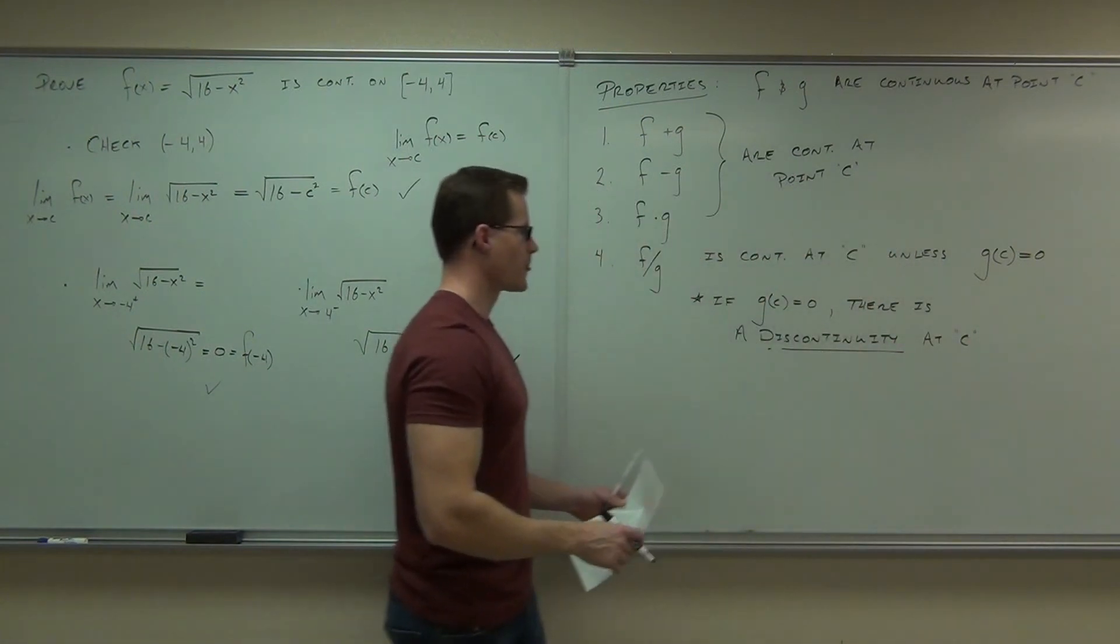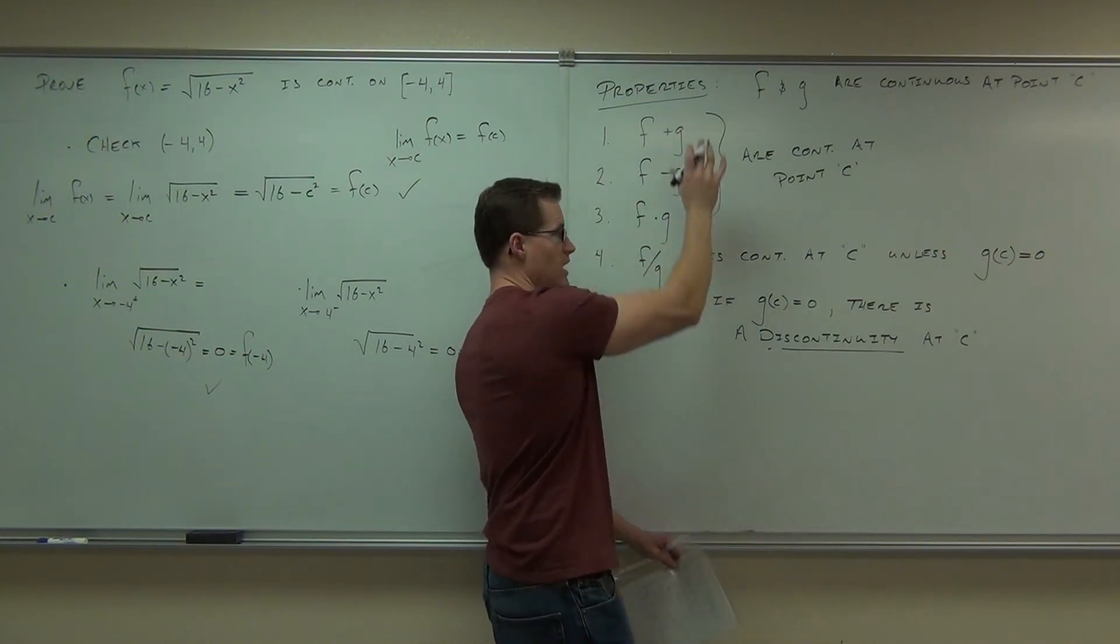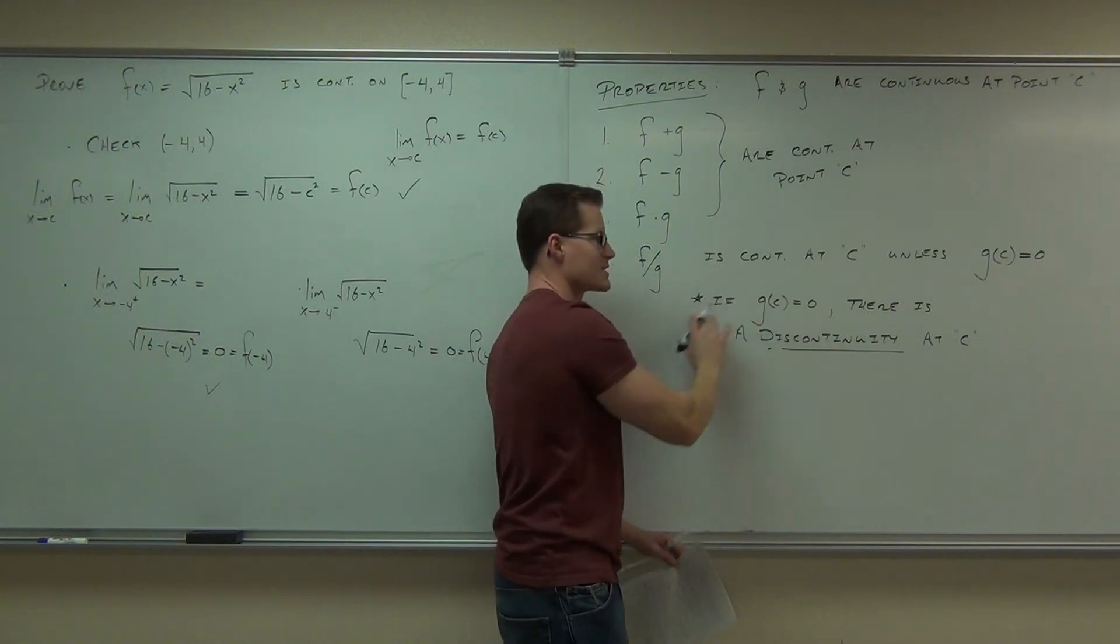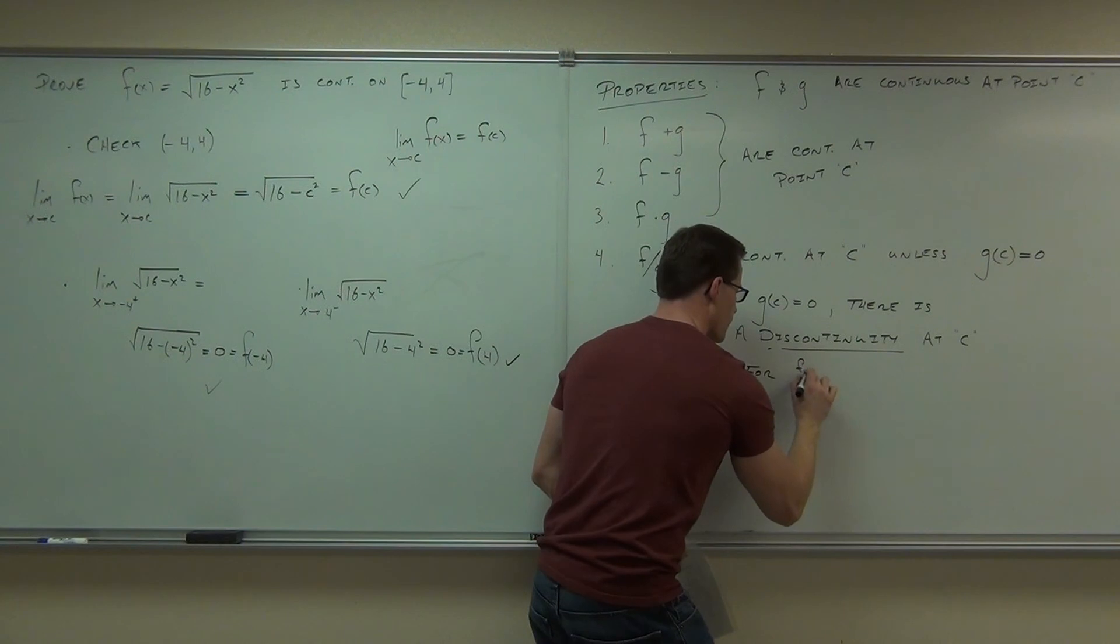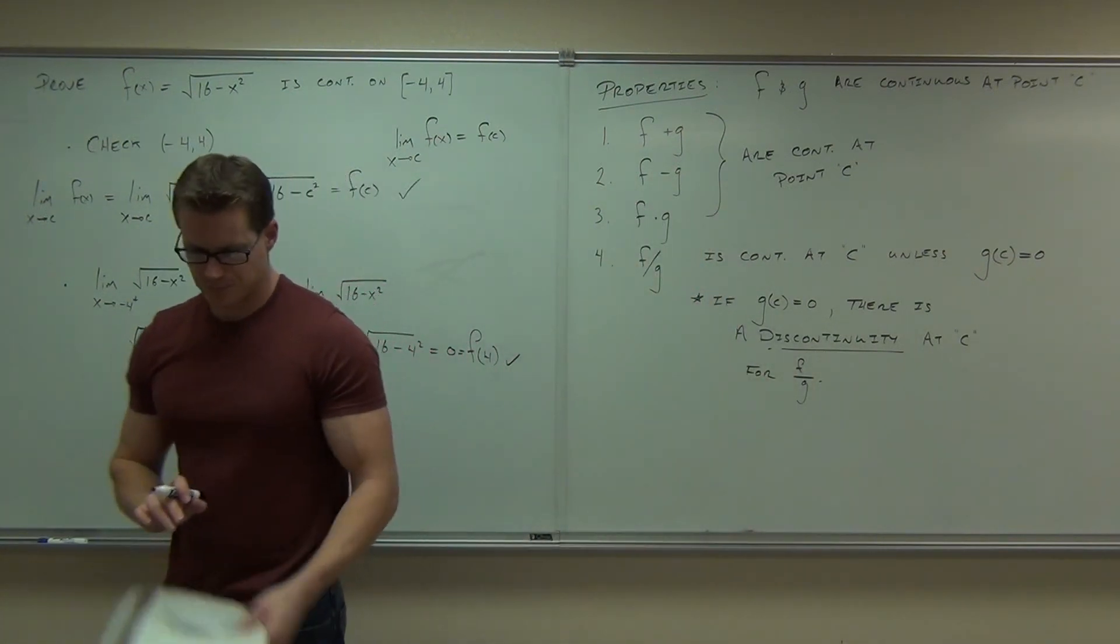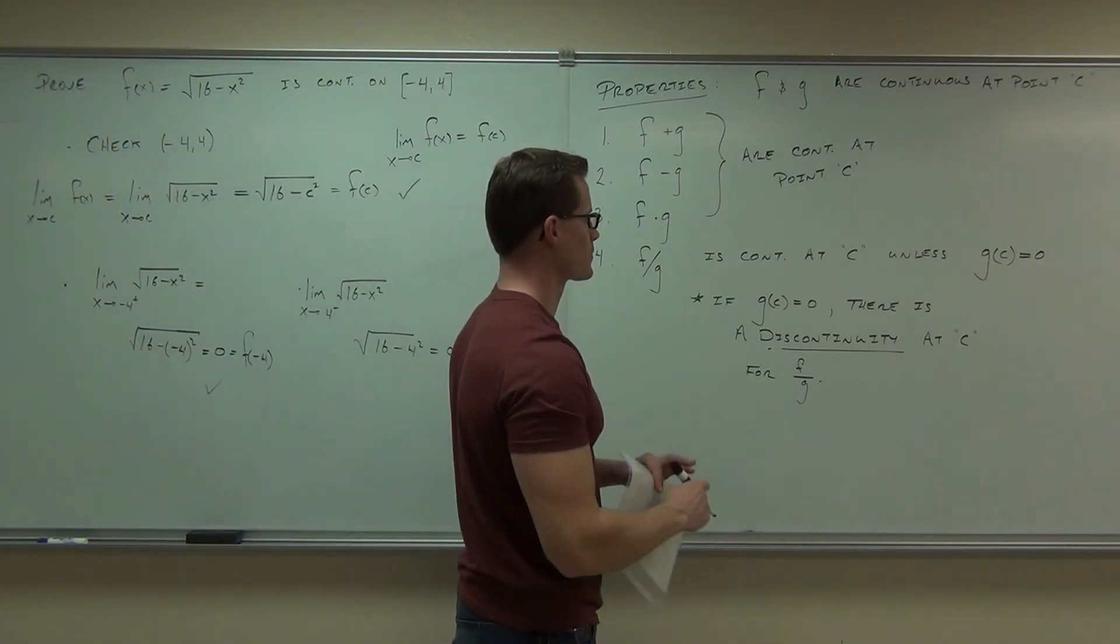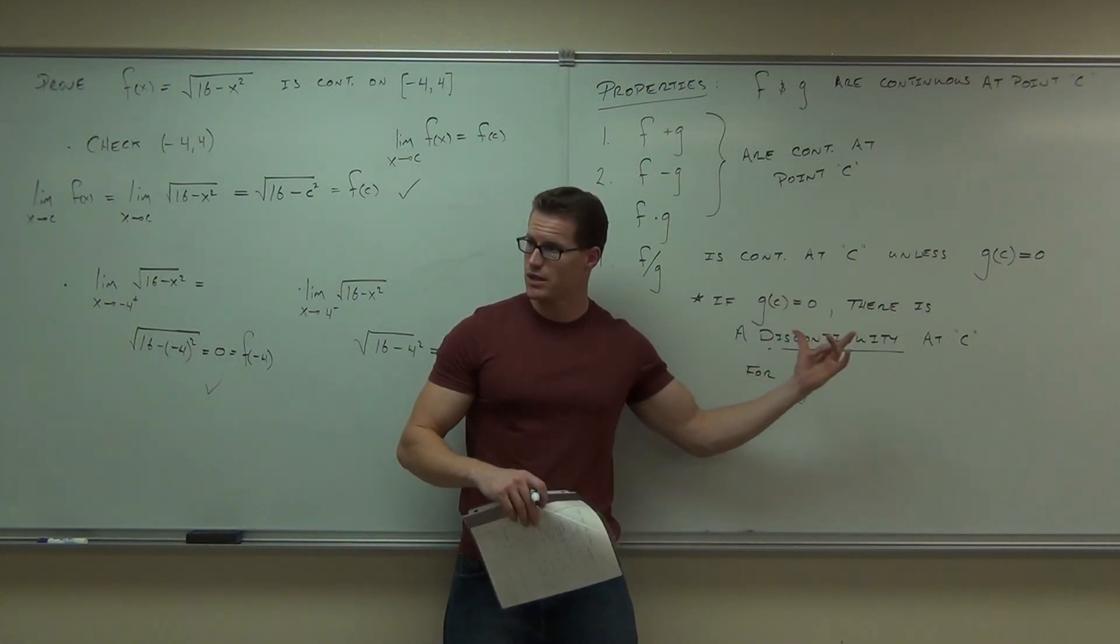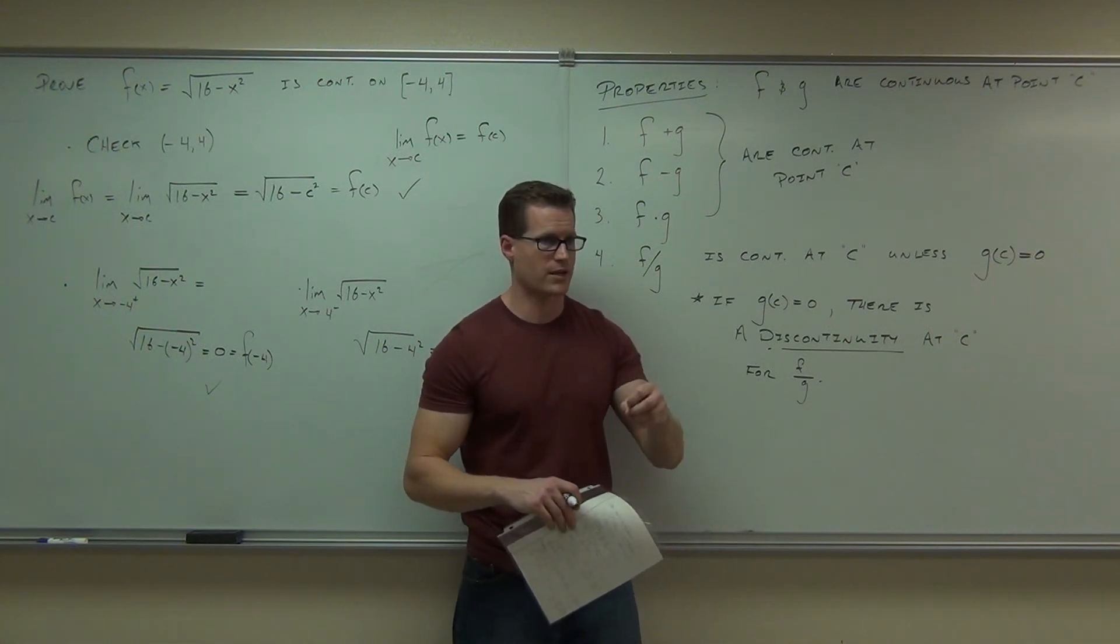There's a discontinuity at c. Of course, we're speaking just of this, though, okay? F would be continuous, and g would be continuous, but f over g, there would be a discontinuity at c. For f over g, for that division of those two functions. Are you guys okay with that, that all of these are okay except for this one? And if this is the case, if g of c does equal zero, then we have a discontinuity, and that's either a hole or an asymptote. Do you remember that?